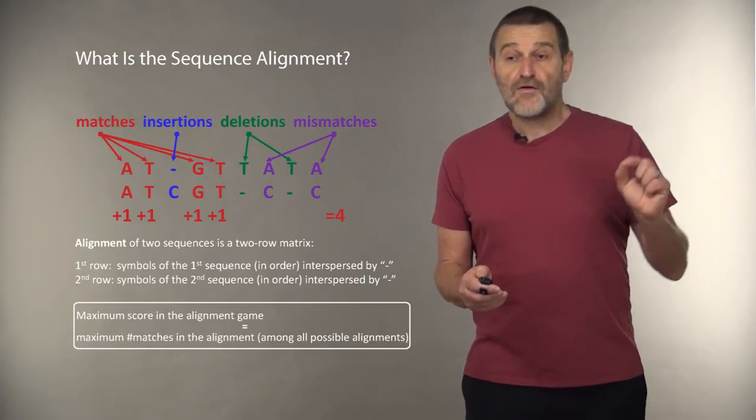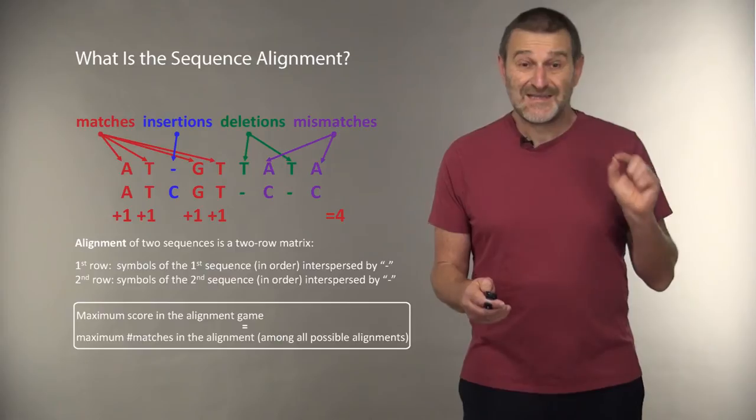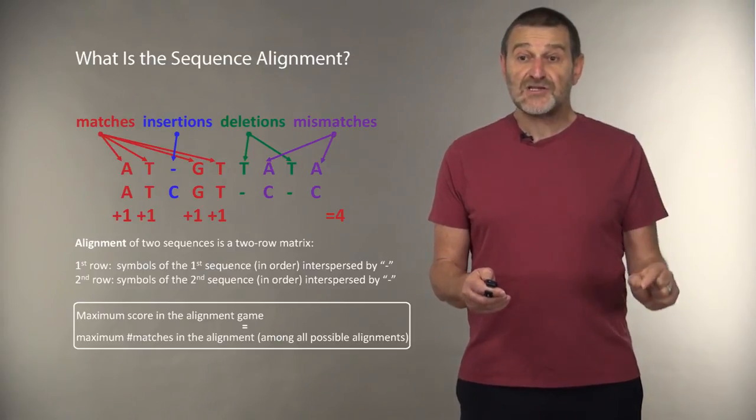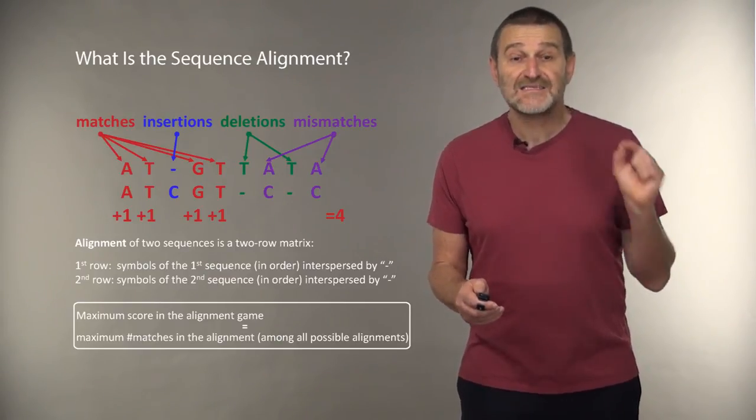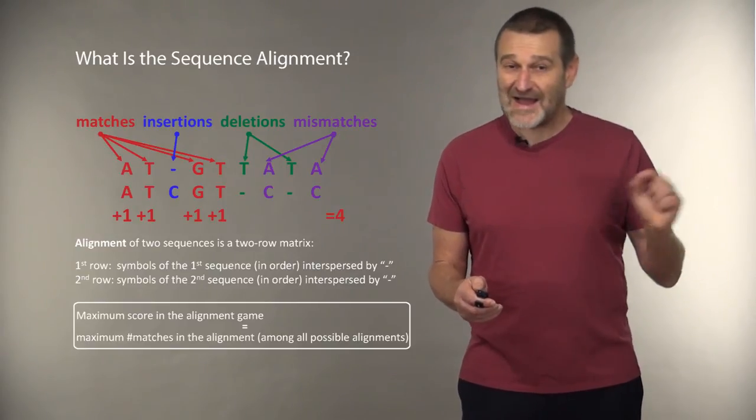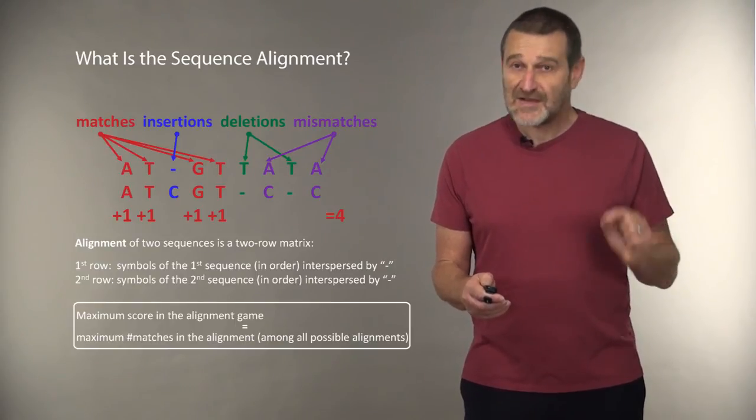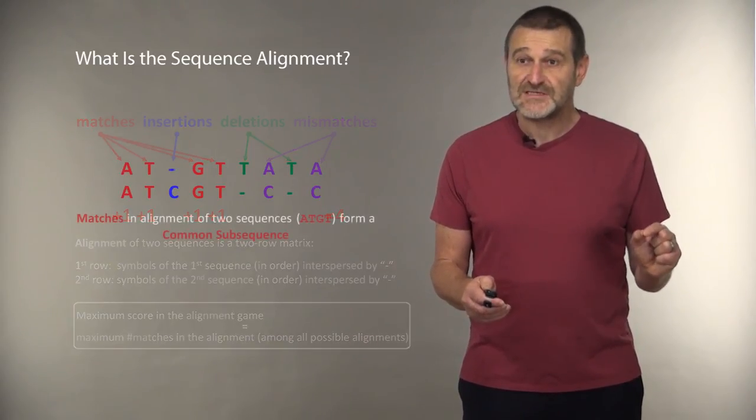So what we learn is that the maximum score in the alignment game is actually the maximum number of matches in the alignment matrix. It doesn't help us to solve either alignment problem or to play optimally the alignment game, but we will see later how to do this.